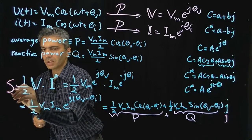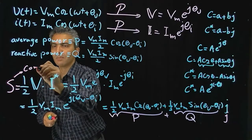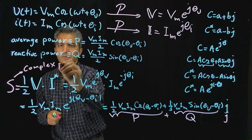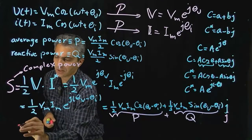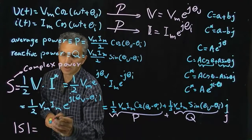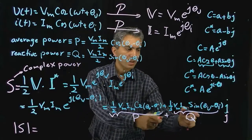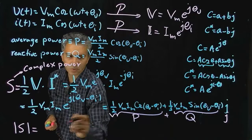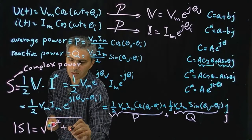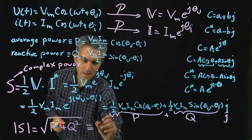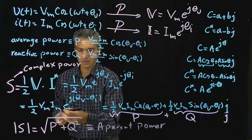Beyond that, we define this value S, called the complex power — for obvious reasons, it's a complex number. We can also calculate the magnitude of this complex value: the magnitude of any complex number is the square root of the real component squared plus the imaginary component squared, so |S| = √(P² + Q²). This is called the apparent power.